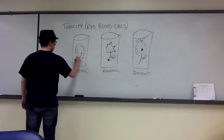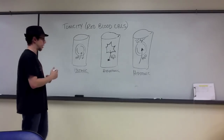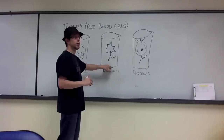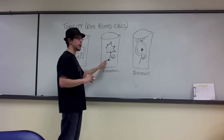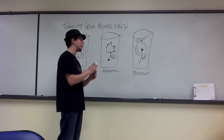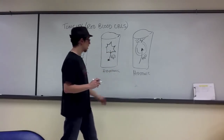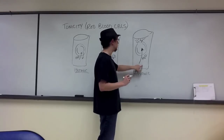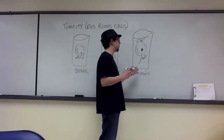Isotonic: solute concentration inside and outside the cell are equal, so water goes in and out at an equal rate. Hypertonic solution: when we place red blood cells in it, the solute concentration outside the cell is greater than inside, so water flows out rapidly to establish equilibrium, causing the cell to collapse and enter the crenated state. When placed in a hypotonic solution, the solution has a lower solute concentration than inside the red blood cell, so water goes into the cell, causing it to expand and eventually burst.